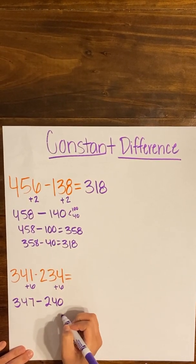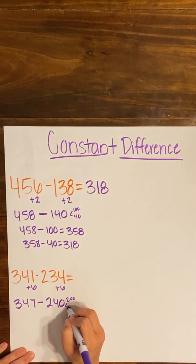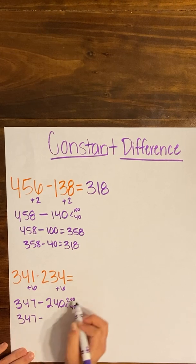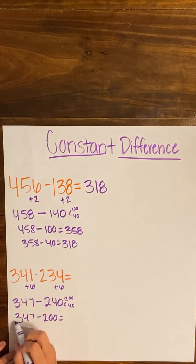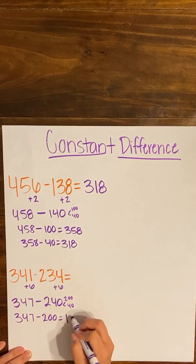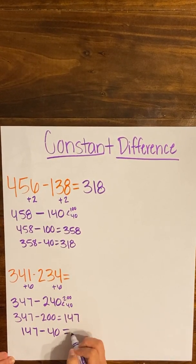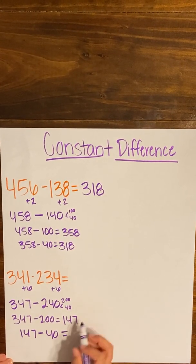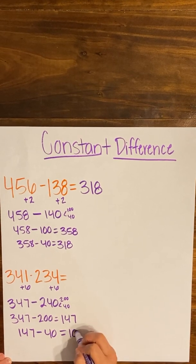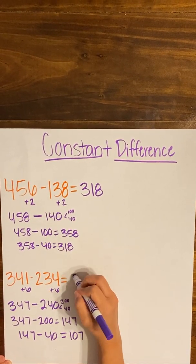Those numbers are much easier to work with. I can decompose 240 into 200 and 40 using place value. So 347 minus 200: 300s minus 200s leaves me with 100, and my 47 stays the same because I have nothing to take away in the tens or ones. Now I have 147 and I need to take away 40. I keep my hundreds the same, four tens minus four tens leaves zero — I put a zero as a placeholder. My seven stays the same. So my answer is 107.